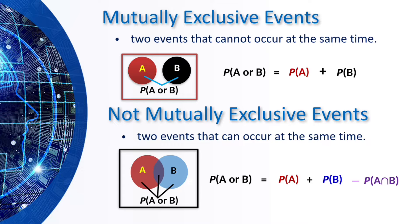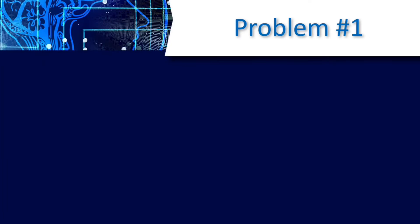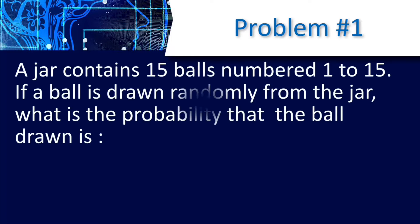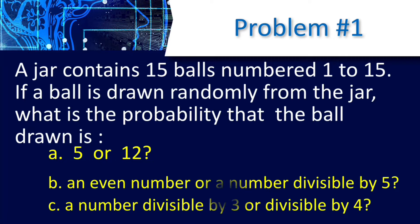Example, problem number one. A jar contains 15 balls numbered 1 to 15. If a ball is drawn randomly from the jar, what is the probability that the ball drawn is: A) 5 or 12; B) an even number or a number divisible by 5; or C) a number divisible by 3 or divisible by 4.